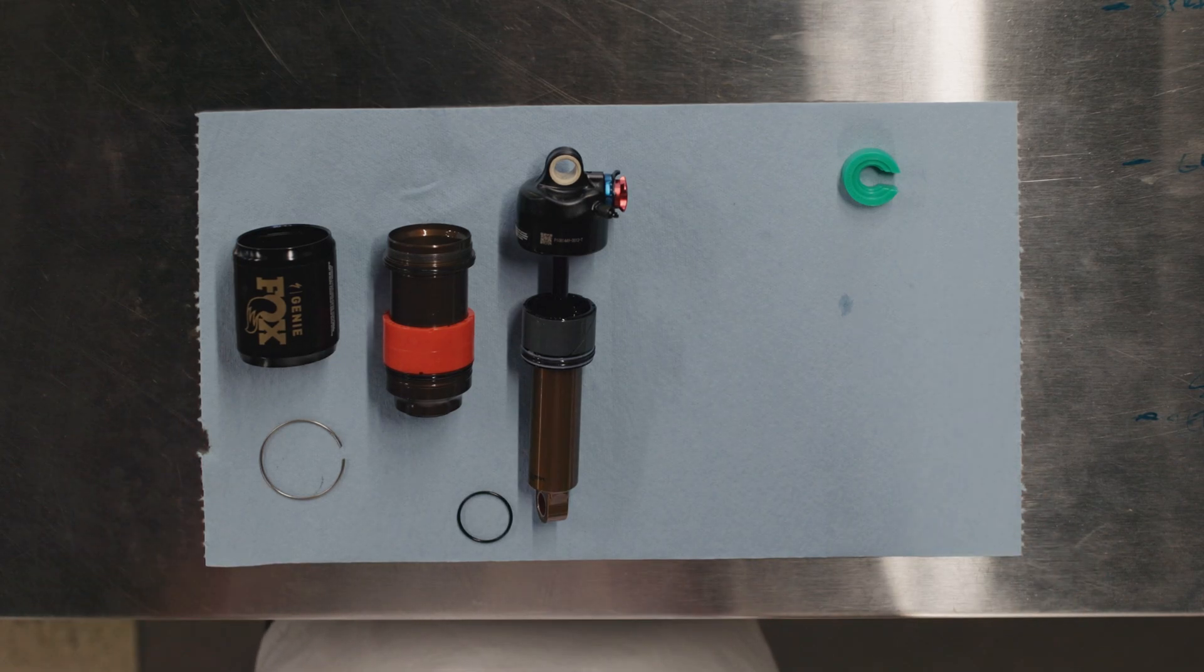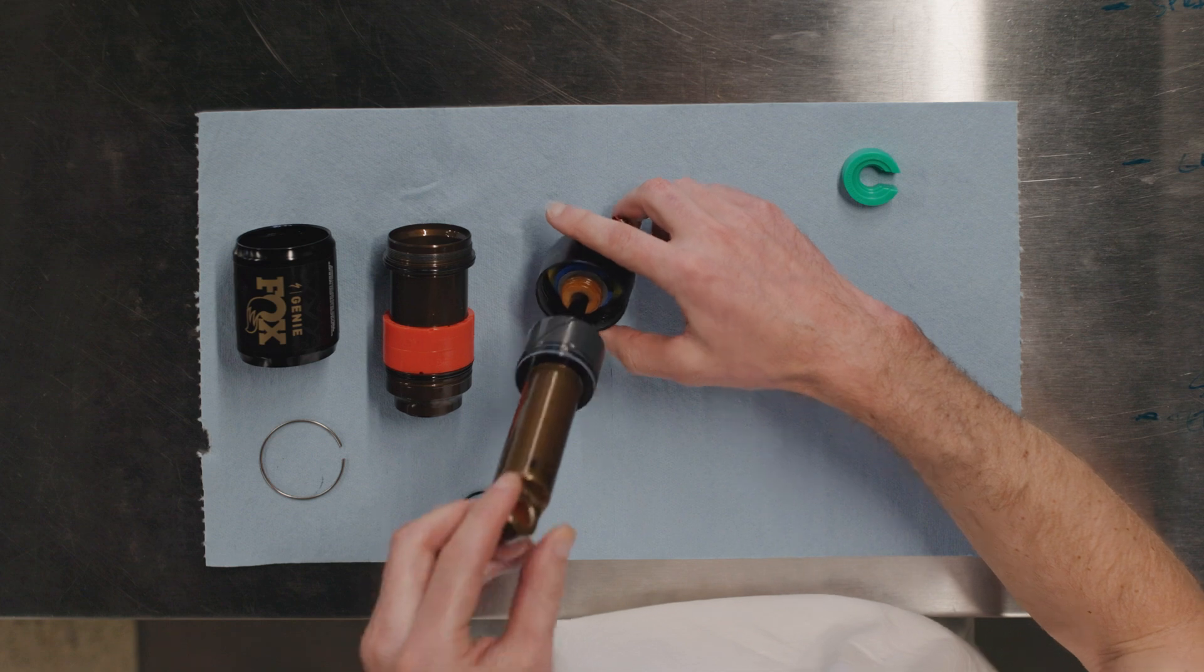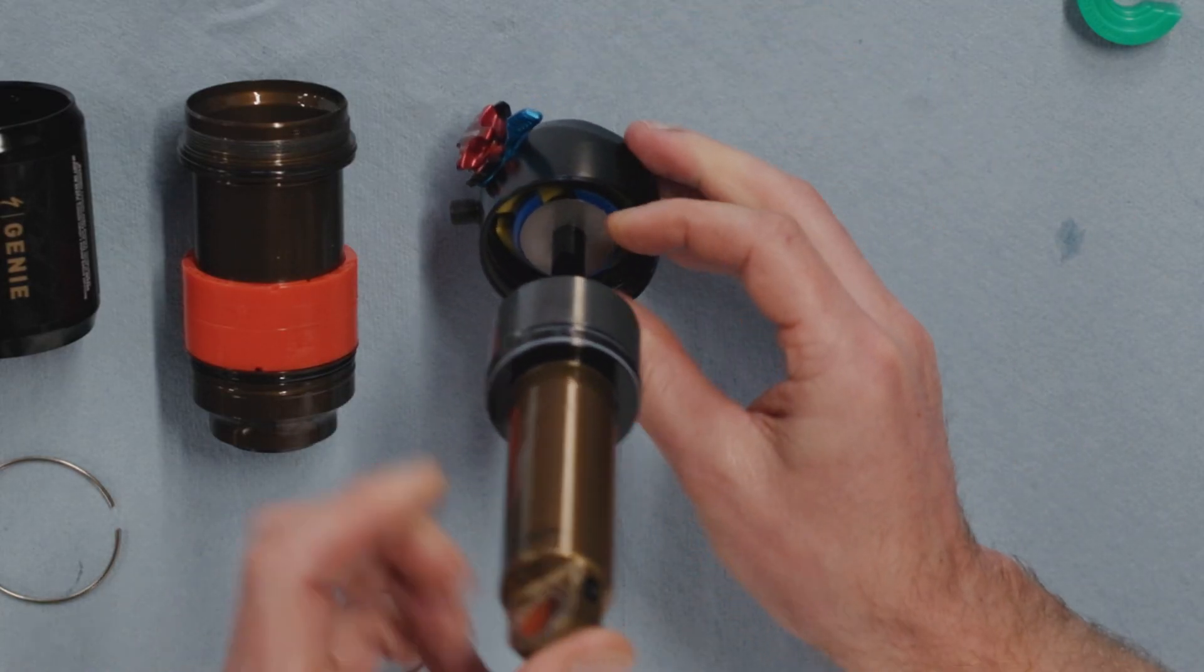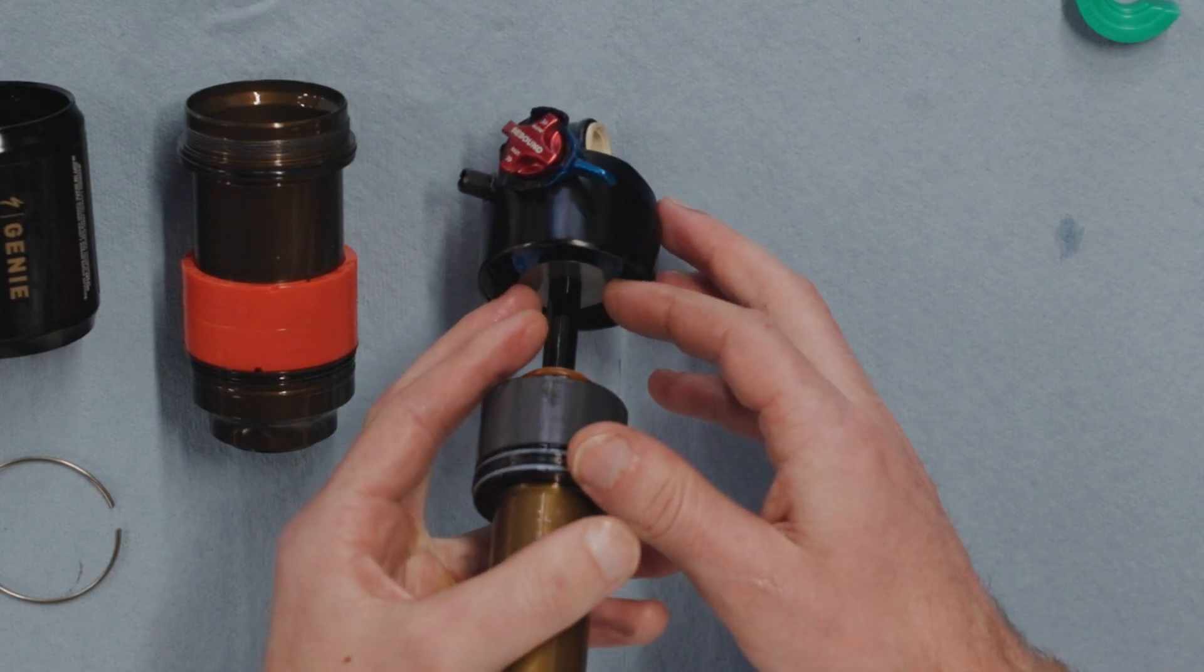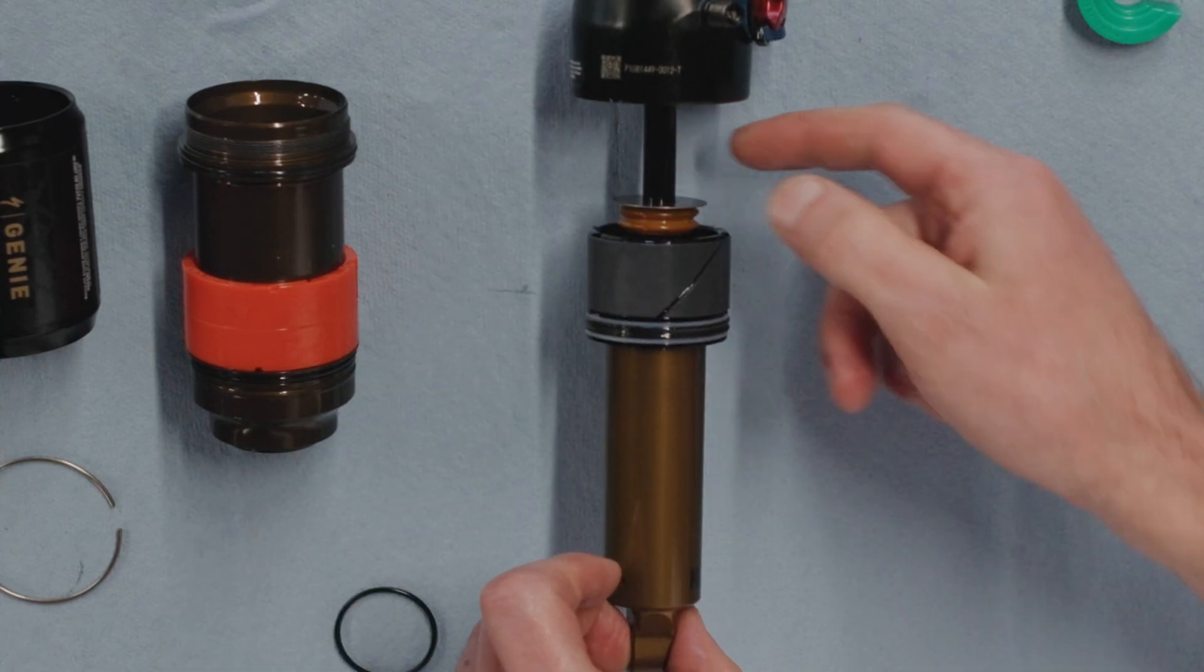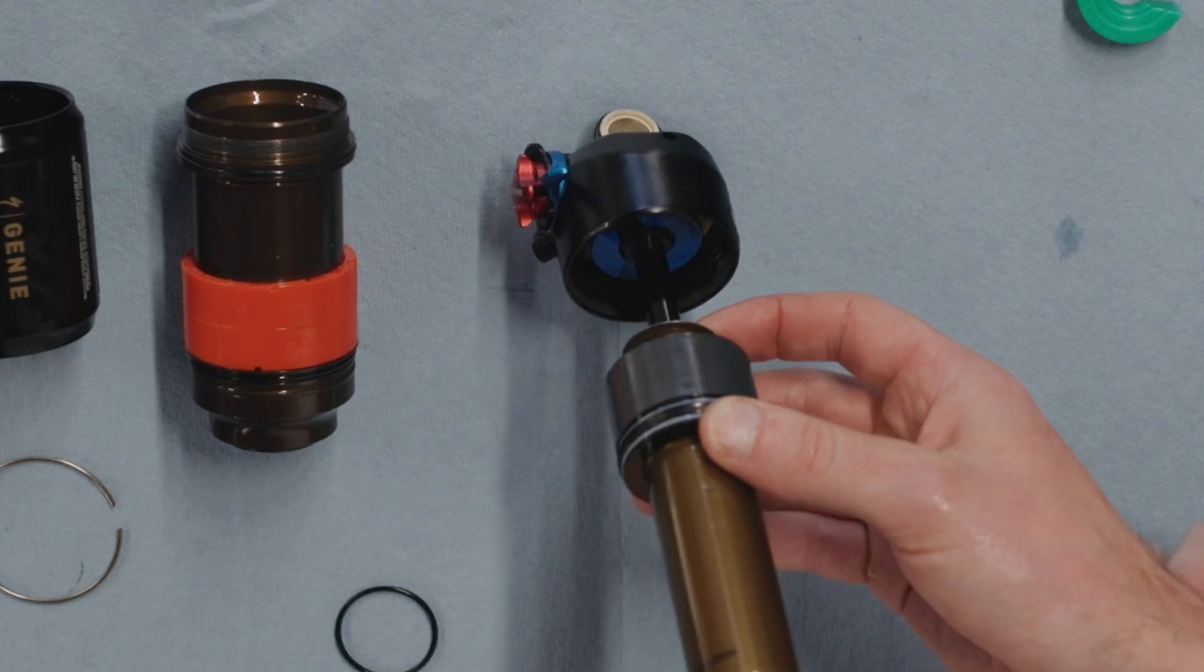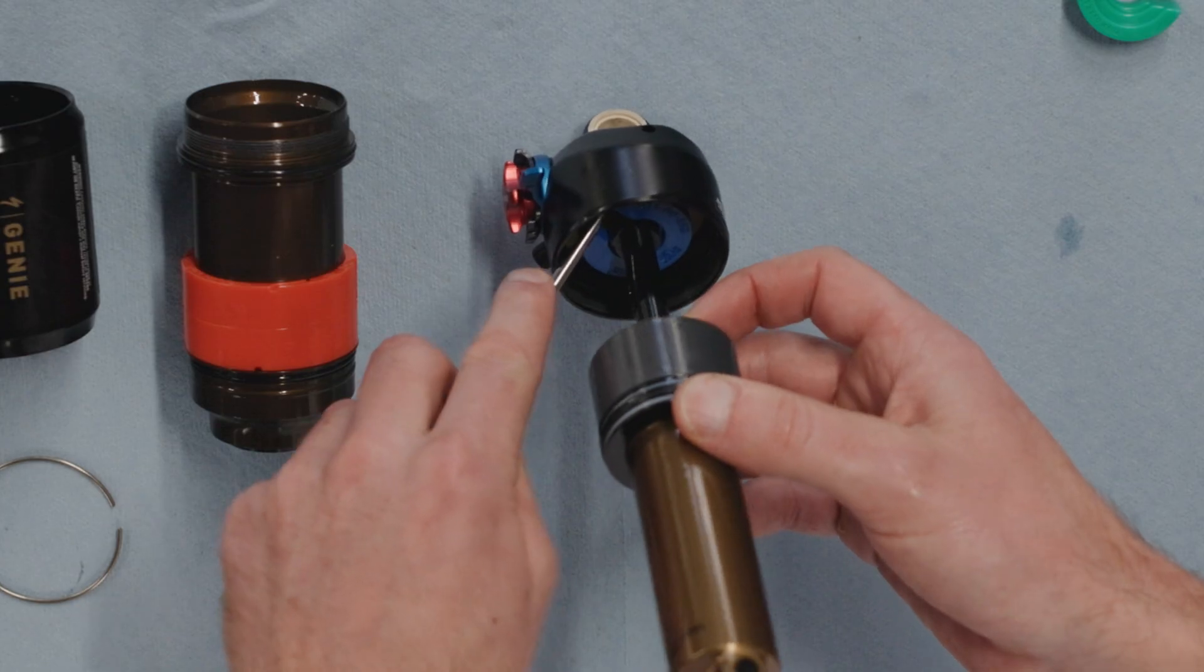If we want to get into how the shock rides at the very end of the stroke, for bottom outs and support there, it's going to be your traditional eyelet volume spacer. So you want to slide the bumper out of the way. There is a steel washer, slide that up. We've moved up the jounce bumper and the steel washer, and we've exposed the blue .2 volume spacer. You can clip that off, a plastic pick is good or a little screwdriver.